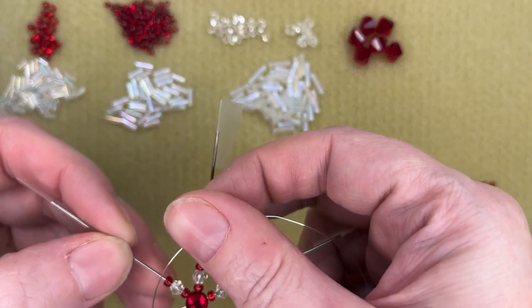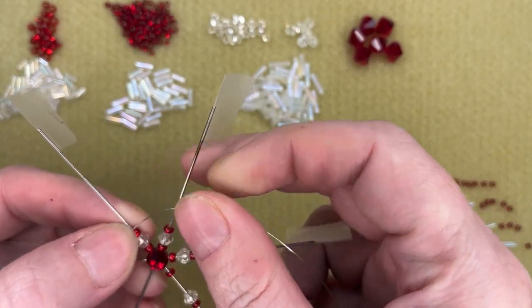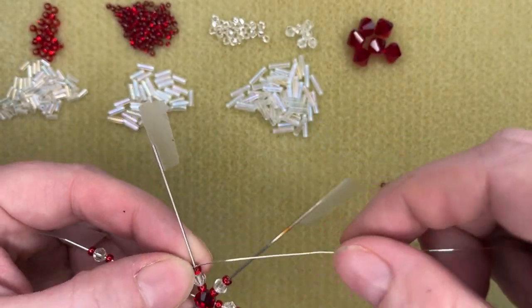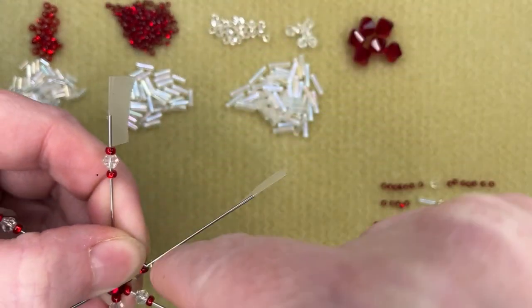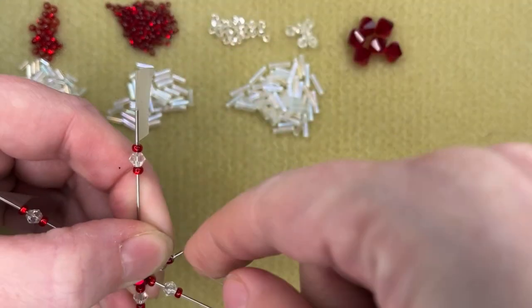So I'm just going to take the 28 gauge wire, lay it across one of the spokes just above the beads, and I'm going to wrap it two or three times. If you only wrap it once it's not going to stay. You need to wrap it a few times here.